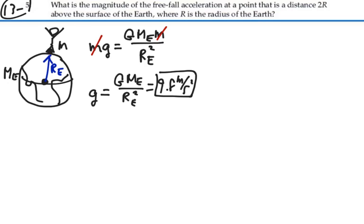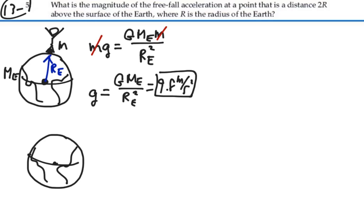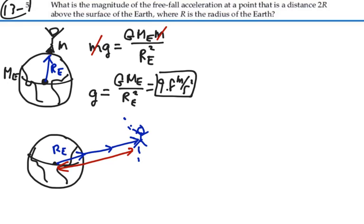What would happen if you were to travel to twice the radius of the Earth above the surface of the Earth? Here's the Earth, and here's the radius of the Earth. Now you're going to go not one radius, but two radii above the surface. You'd be in orbit out here, and so the actual distance between you and the Earth's center is not 2r, but three times the radius of the Earth. You've gone from one radius to three times the radius in distance between the two masses.